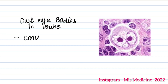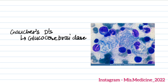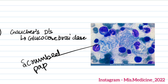Question 18 involved urine. Question 19 was about CMV (cytomegalovirus). Question 20 was about glucose cerebrosidase — Gaucher's disease, with the crumpled paper or salt-like paper appearance.